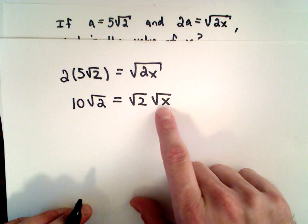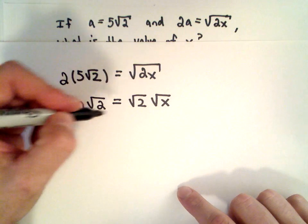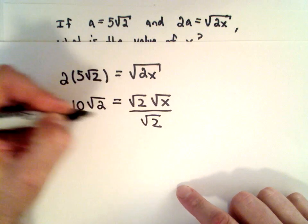I'm trying to solve for x, so the first thing I'm going to do is divide both sides by the square root of 2. The square root of 2's will cancel, and I'm left with 10.